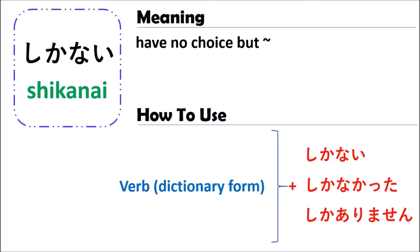The third form is しかありません (shika arimasen). Shika arimasen and shikanai have the same meaning and are present tense. However, しかない is casual and not polite, while しかありません is the more polite form.